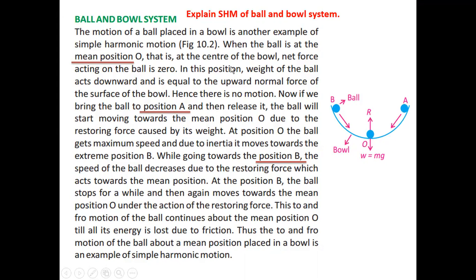If we talk about the initial position, that is the mean position O — when the ball is at the mean position O at the center of the bowl — the net force acting on the ball is zero. At the mean position, the ball's weight acts vertically downward and the reaction of the bowl's surface acts vertically upward. Both forces have the same magnitude and opposite direction, so they cancel each other and the net force at the mean position is zero.